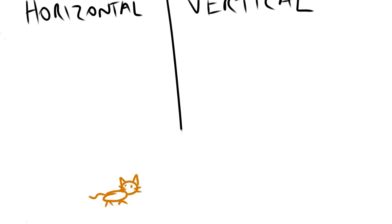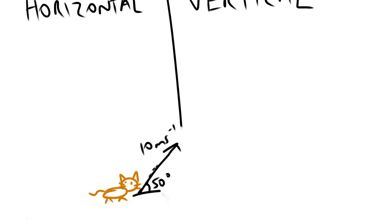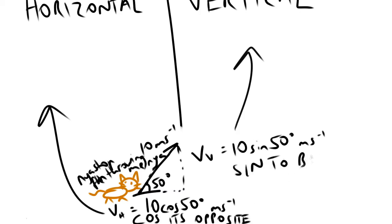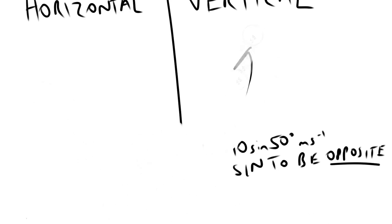For example, if you throw a cat at 10 meters per second at 50 degrees to the horizontal, it will travel at 10 cos 50 degrees meters per second horizontally, cos it's adjacent, and 10 sin 50 degrees meters per second vertically, because it's a sin to have an opinion opposite to mine.